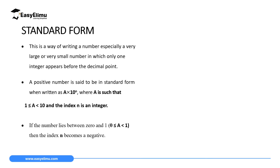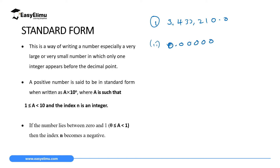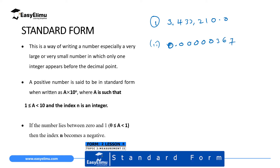Standard form is a way of writing numbers, especially very large numbers or small numbers, such that only one integer appears in front of a decimal point. A good example of a very large number is 3,433,210.0. A good example of a very small number is 0.0000367.